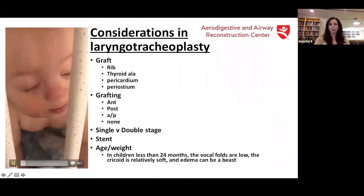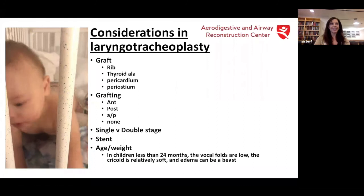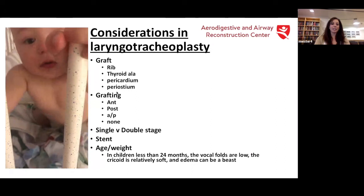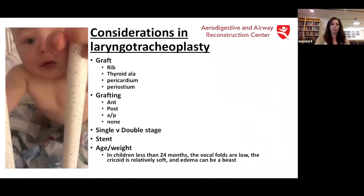Some considerations in laryngotracheoplasty. This is a baby that has stridor — one of our most famous patients, just reconstructed. You really want to think about what is the type of graft material, where you're putting the graft — in the front, in the back, both, or none at all — whether you'll do it without any grafting material, one stage versus two stage, what kind of stent you'll choose, and how old and big the child is. In children who are small, especially less than 24 months, the vocal cords are low and the cricoid is soft, and edema can just be a beast in these kids, which can influence your reconstruction choice.